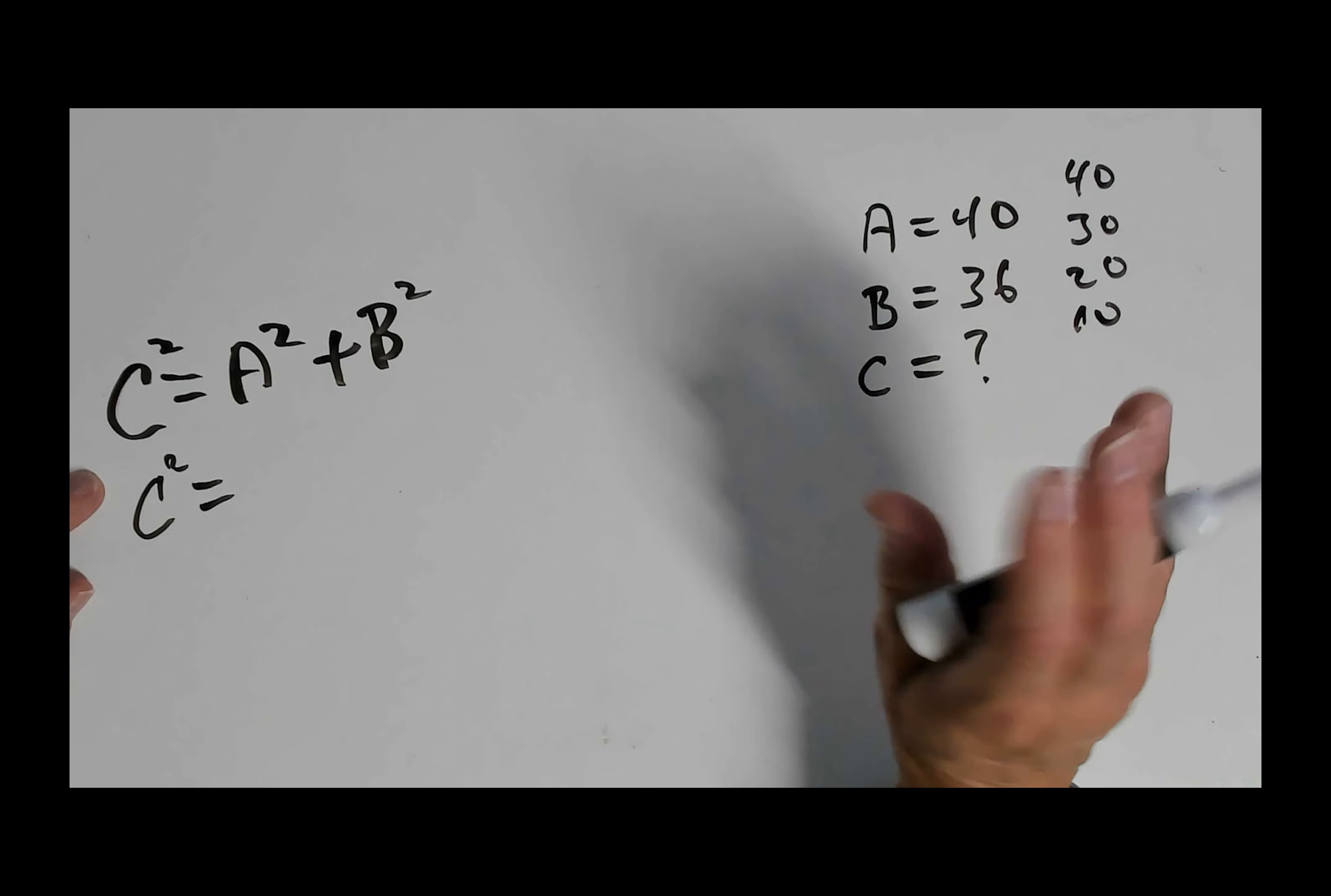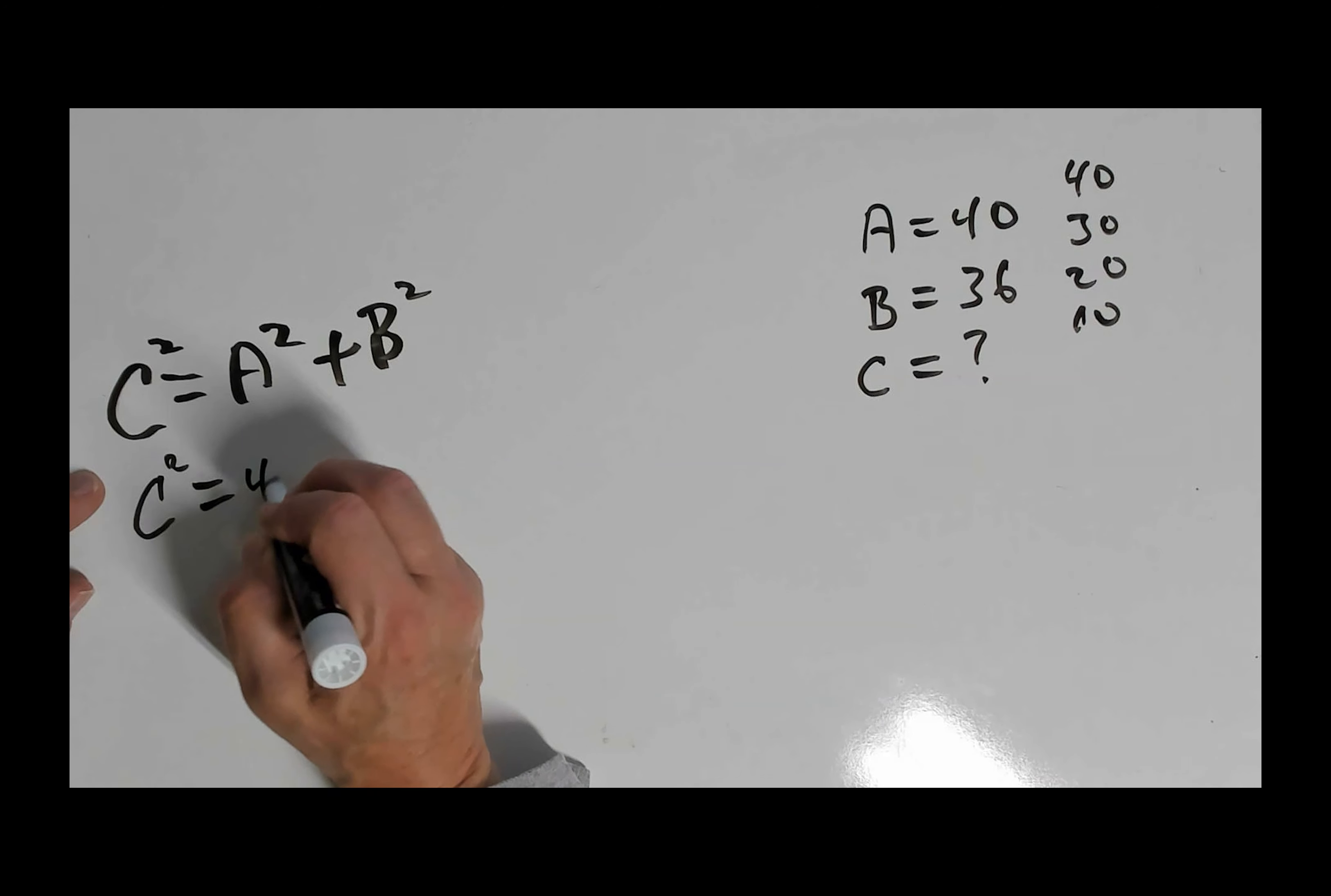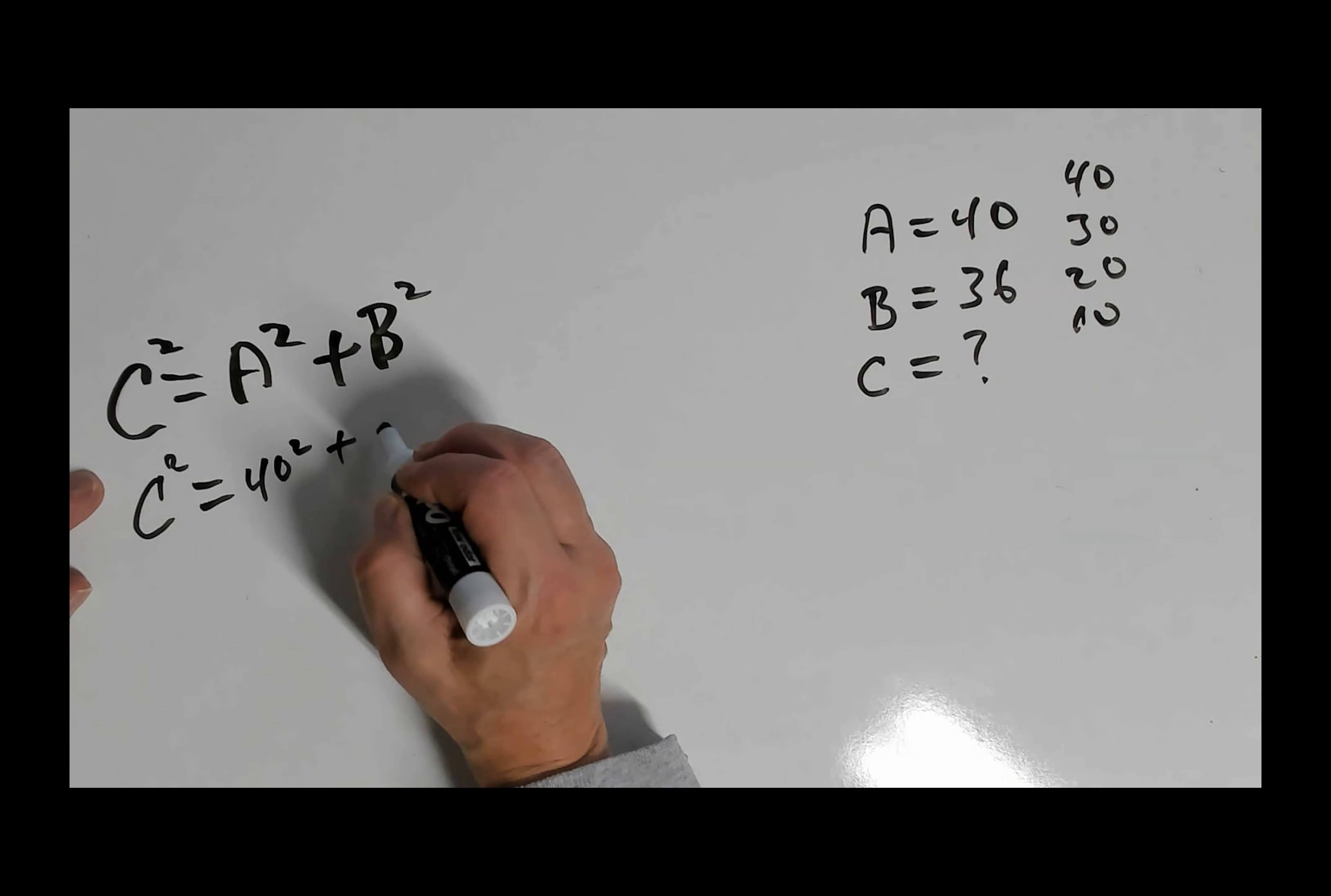It's not just one size fits all. So in this case, A at this point is 40, so it's 40 squared. All right, plus B, which is 36 squared.